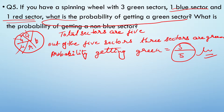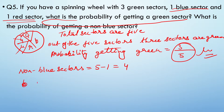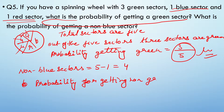What is the probability of getting a non-blue sector? Non-blue means not blue — so three green and one red are non-blue, giving 4 non-blue sectors. Total sectors = 5, blue sectors = 1, so non-blue = 4. Therefore probability of getting a non-blue sector = 4 upon 5.